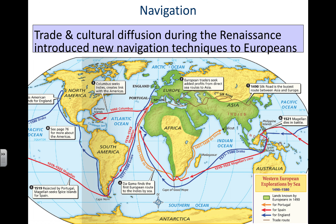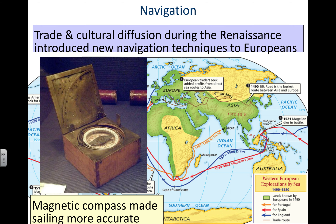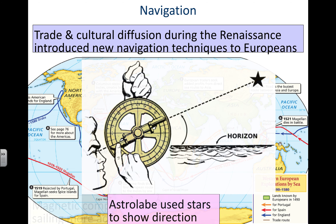For navigation, the trade and cultural diffusion occurring during the Renaissance, sparked initially by the Crusades, introduced new navigation techniques to Europeans from several sources of information. They also had a far better understanding of wind patterns and ocean currents — two extremely important concepts for navigating effectively at sea for extended periods. The magnetic compass, gained from interactions with Asian empires, made sailing more accurate and allowed sailors to navigate with purpose and direction. The astrolabe is another important tool — using trigonometry, if you can calculate a 90-degree angle, you can navigate using the stars to determine the ship's direction.